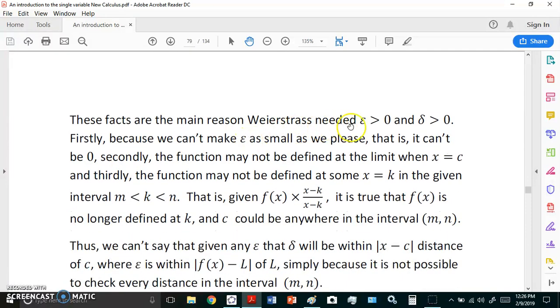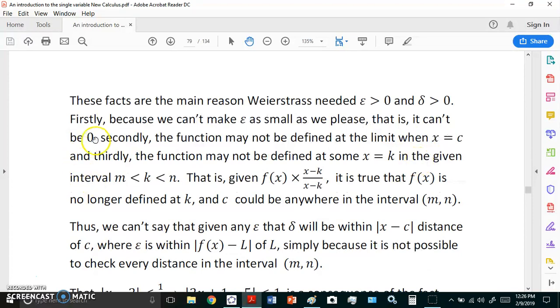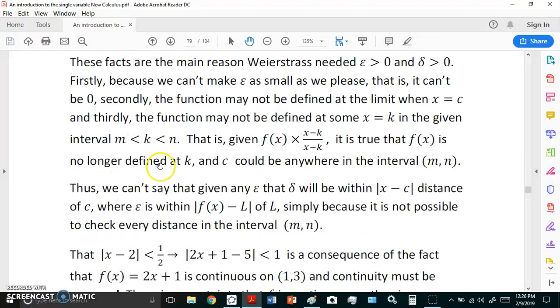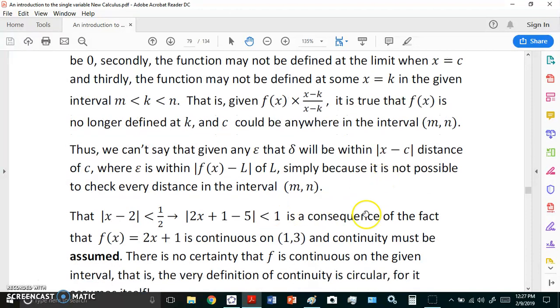These facts are the main reason why Weierstrass needed epsilon greater than 0 and delta greater than 0. Firstly because we can't make epsilon as small as we please. If we want it to be zero we can't do that. That is it can't be zero. Secondly the function may not be defined at the limit when x equals c. And thirdly the function may not be defined at some x equals k in the given interval m less than k less than n. That is if we multiply our function by 1, this is the way mainstream academic morons introduce holes into the function and undefine it at x equals k.